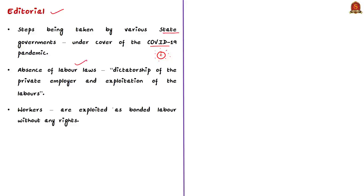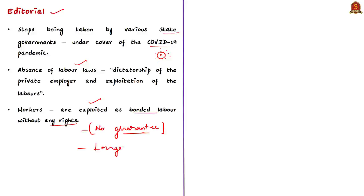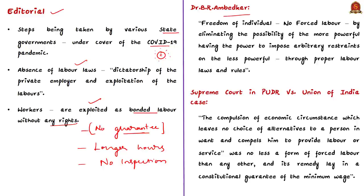All these changes mean that workers are to be used as bonded labor without any rights, for sheer exploitation in the interest of capital without any guarantee of wages, safety and social security. These reforms may allow industry to expand and work for longer hours and even without inspections in some cases by the labor department. In this context, it is highly relevant to quote the viewpoints of Dr. B.R. Ambedkar on rights of labor.